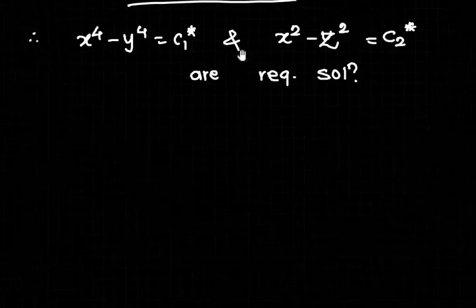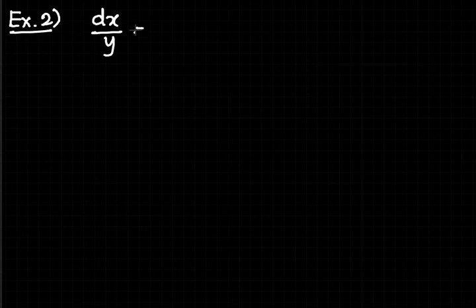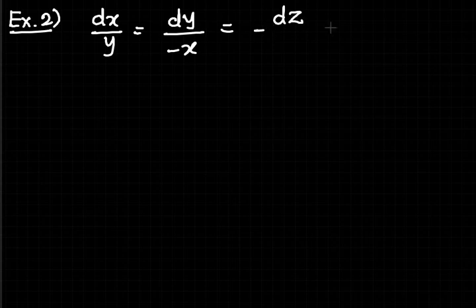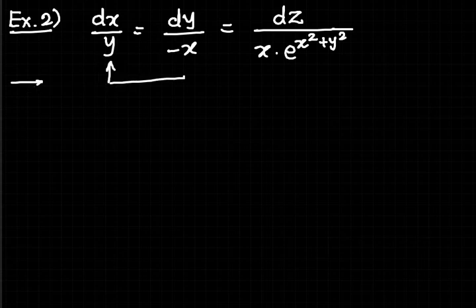Let us take example number 2 on the method of grouping. The question is: solve dx/y = dy/(−x) = dz / (x · e^(x²+y²)). Observing the first and second ratios, the equation contains variables x and y.